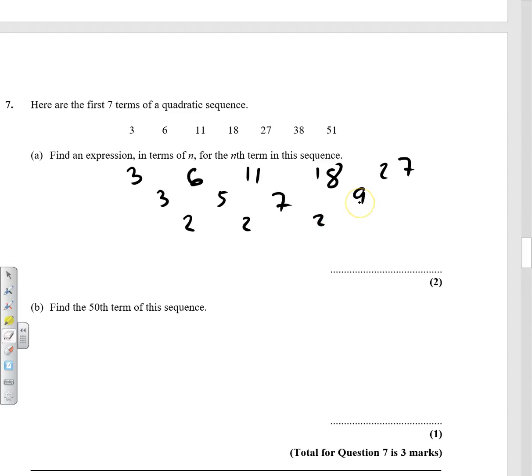Because the second difference is 2, we know it's something to do with our square numbers, n squared. Remember, you halve the second difference to be the coefficient of n squared. So we've got 1n squared. Let's write out our square numbers.